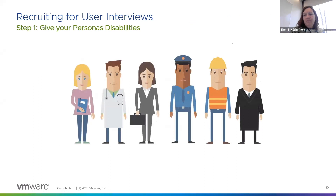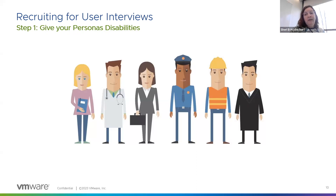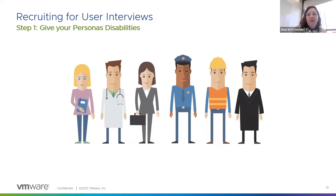Now I'm going to give you the cookbook — the things you need to do to make your research work for people with disabilities. Number one: give your personas disabilities. If you've got Shauna, who's an IT manager working in a server center, give Shauna migraines, give Shauna carpal tunnel. Don't make it so your personas have no accessibility needs, because then you're not opening up the question of how that software is going to work for that individual. My first recommendation is: always give your personas disabilities.